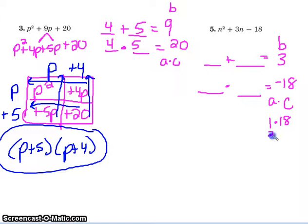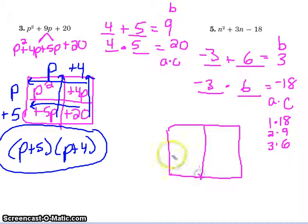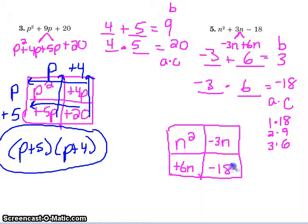1 times 18, 2 times 9, 3 times 6. So it's got to be 3 and 6, right? But negative 3 and 6. So I set myself up. I keep the n squared. But this is going to be negative 3n and positive 6n. So n squared minus 3n plus 6n minus 18.